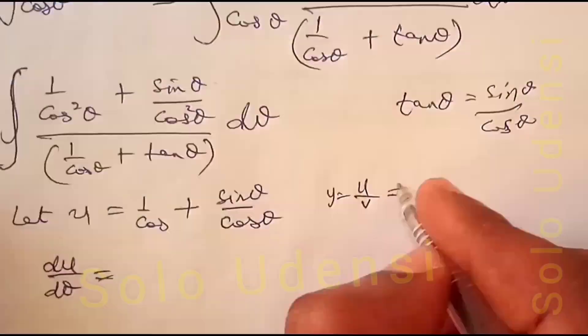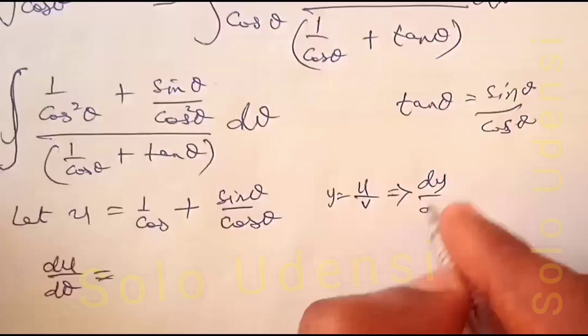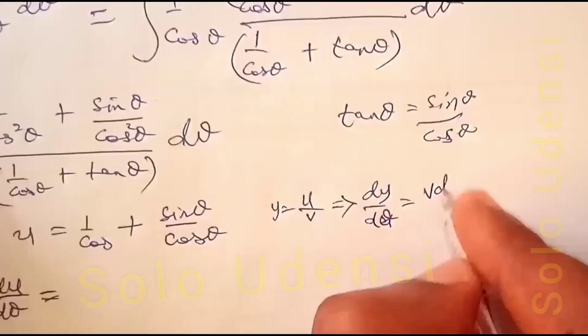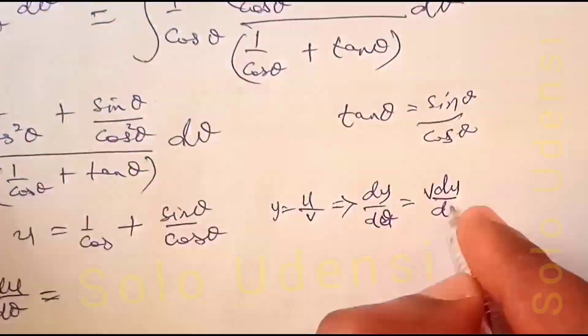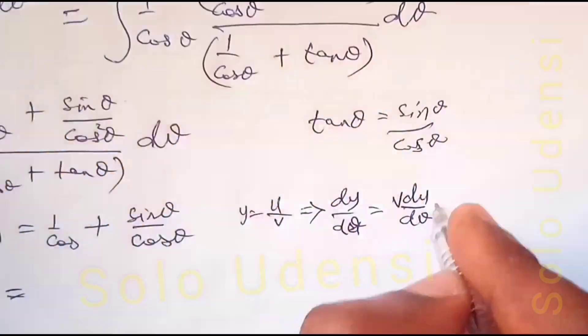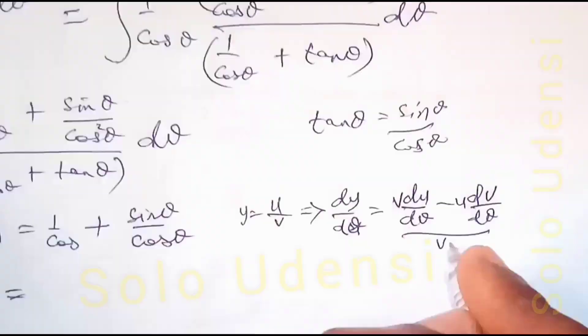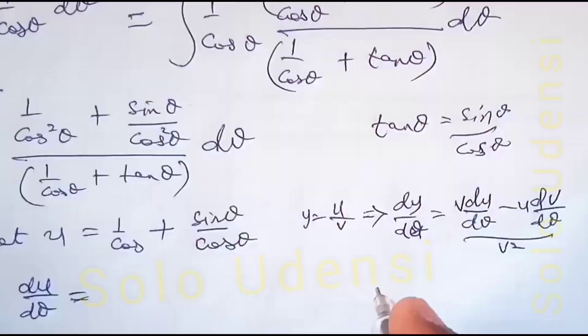then dy/dθ equals v times du/dθ minus u times dv/dθ, all over v squared. That's the formula.